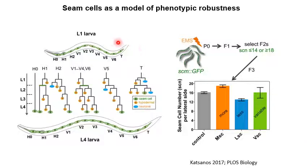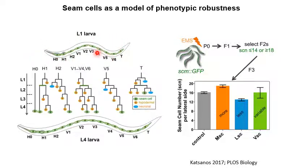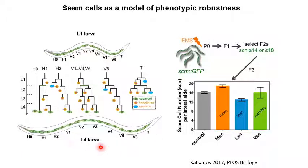Here we investigate the seam cells as a model of phenotypic robustness. The seam cells are a population of cells that reside in the epidermis of C. elegans — there are 10 cells on hatching down each lateral edge. These go through rounds of asymmetric and symmetric divisions, as shown in the lineage here, which expands the population to 16 per lateral edge at the end of larval development. This number of 16 on each lateral edge is invariant between individuals, making it a good model to uncover robustness.